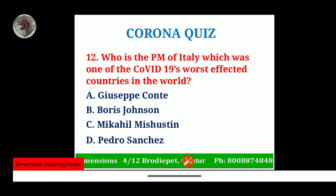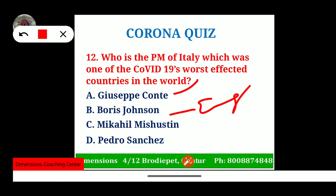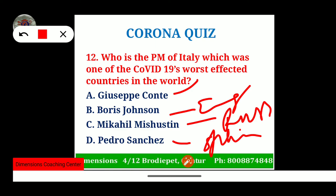Who is the Prime Minister of Italy, one of COVID-19's worst-affected countries? After the US, Italy was the worst affected among all European countries. The Prime Minister of Italy is Mr. Giuseppe Conte. Mr. Boris Johnson is the Prime Minister of Britain and was among those who contracted the virus and was slowly recovering. Mikhail Mishustin is the Prime Minister of Russia, who also recently contracted the virus. Pedro Sanchez is the Prime Minister of Spain, another severely affected country.